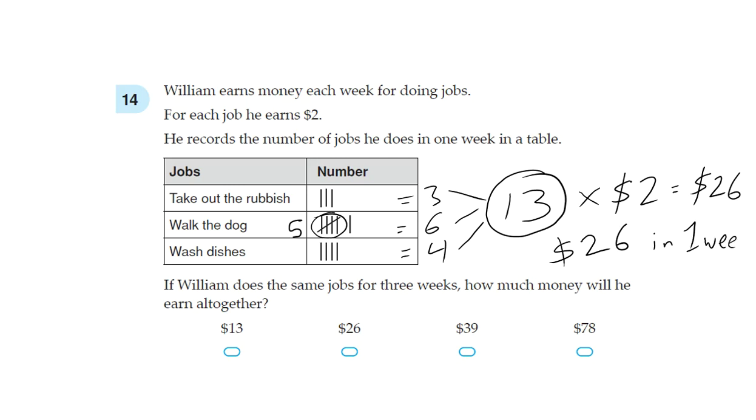Therefore, how much money would he earn in 3 weeks? We need to do 26 times 3. That gives us 3 times 6 is 18, 3 times 2 is 6, plus 1 is 7. So $78 is your answer.